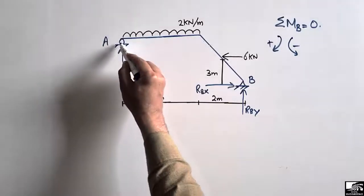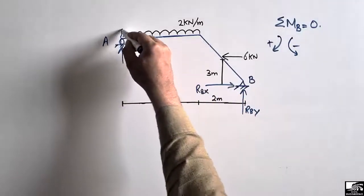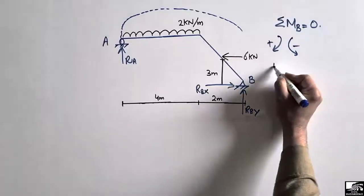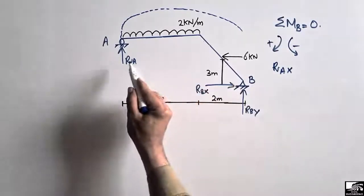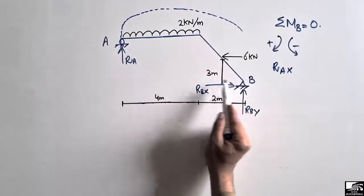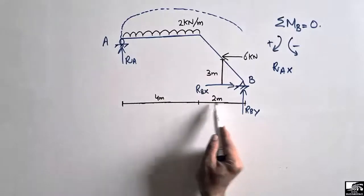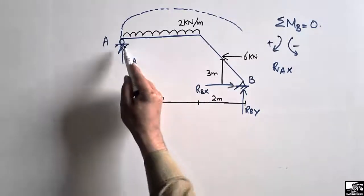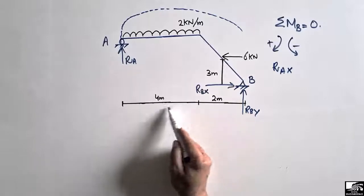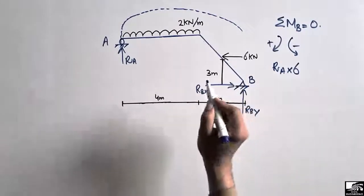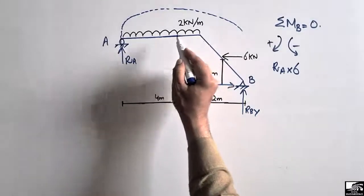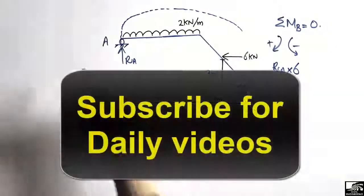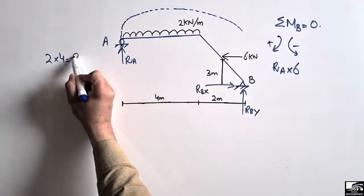RA will create a moment about point B in a clockwise direction, so it is taken as positive: RA multiplied by the moment arm. The moment arm is the perpendicular distance from this point to point B, which is 4 meter plus 2 meter, giving a total of 6 meters. The uniformly distributed load of 2 kilonewton per meter, multiplied by the distributed length of 4 meters, gives a resultant of 8 kilonewton.